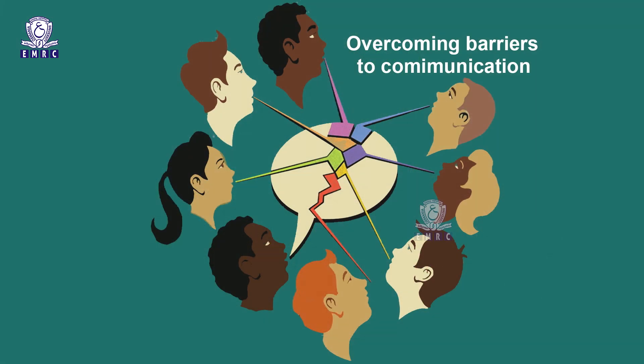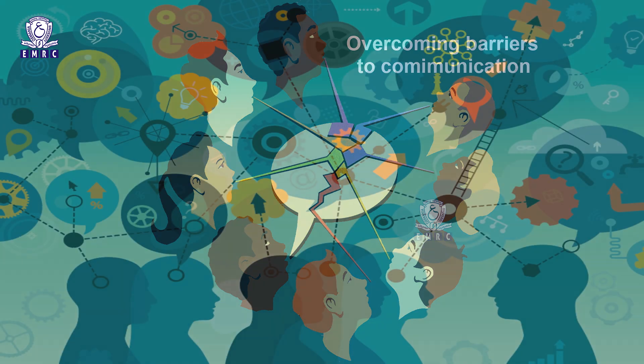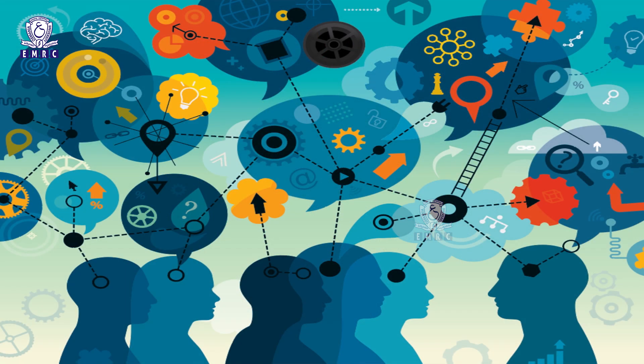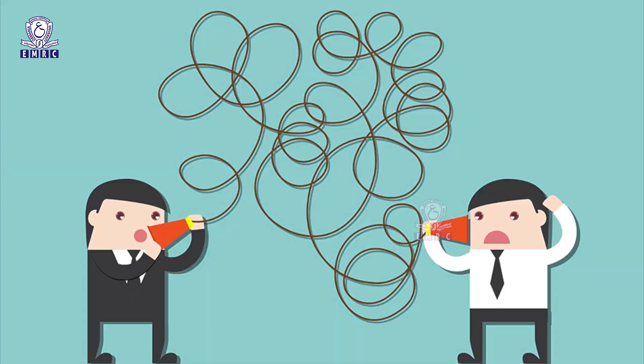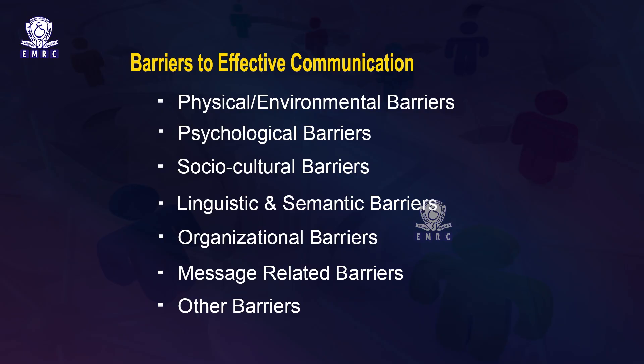Overcoming barriers to communication is helpful in reducing the gap of uncertainties in the process of communication. To conclude today's lesson, we have understood the meaning of communication, purpose of communication, steps in the communication process, and barriers to communication. The various barriers we have seen and discussed are physical or environmental barriers, psychological barriers, socio-cultural barriers, language or semantic barriers, organizational barriers, and message-related barriers.